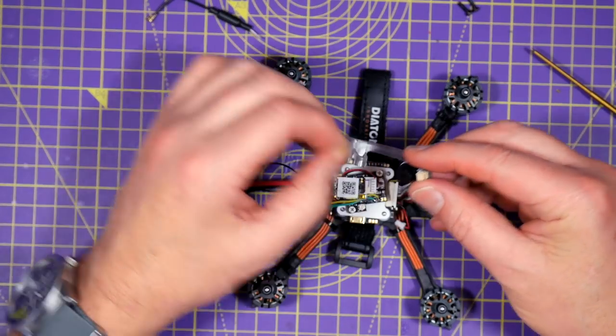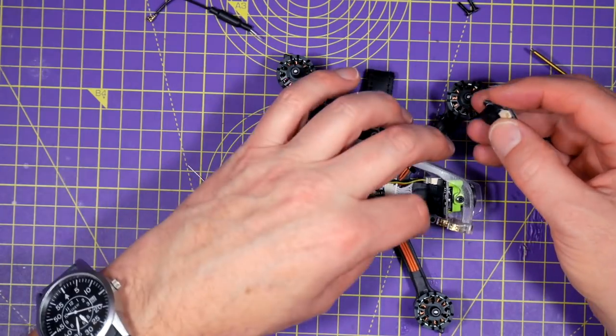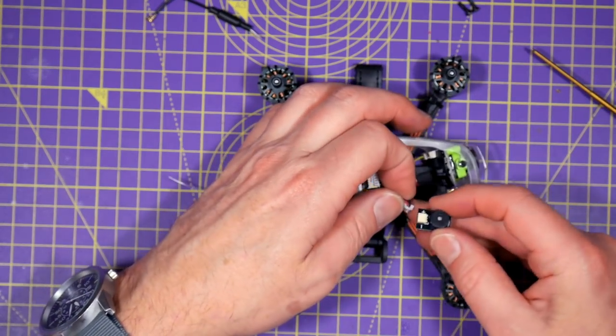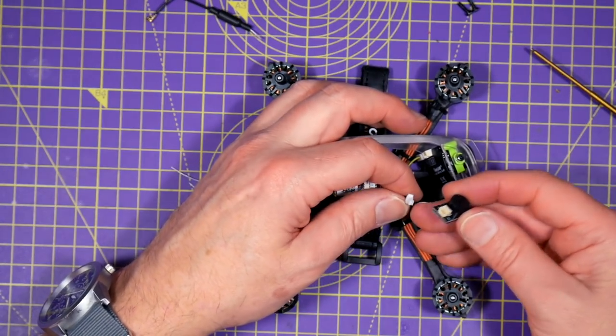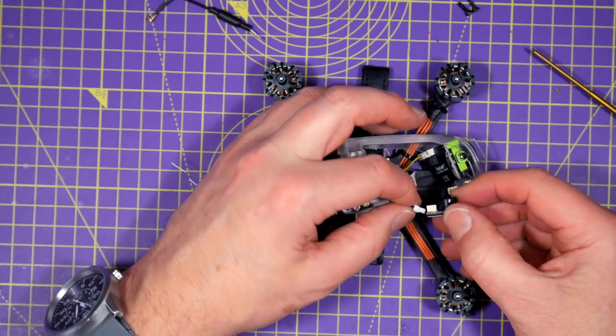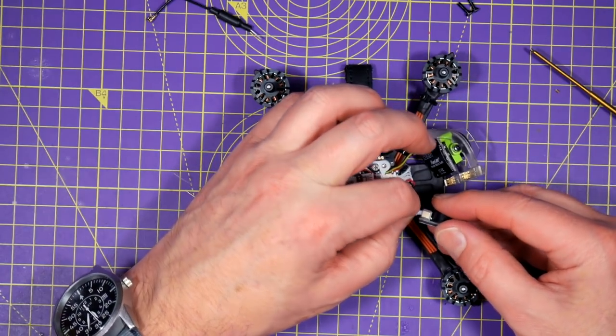Next up is the buzzer. Now this has got some double-sided foam on the back of the PCB already and it plugs in with this two pin JST. There's enough room just behind the camera to fix this down onto the frame.